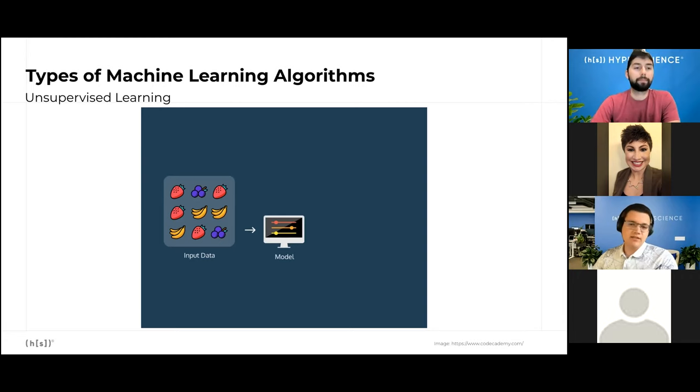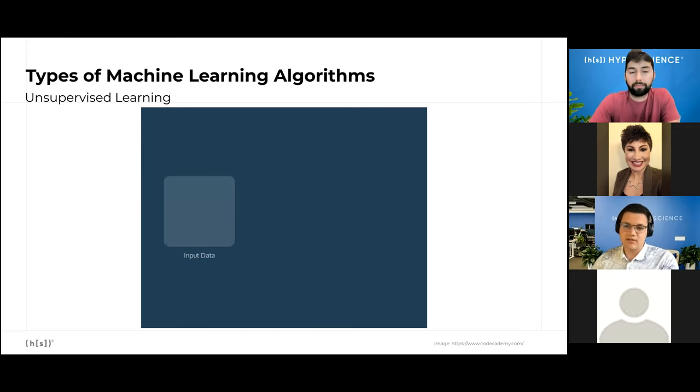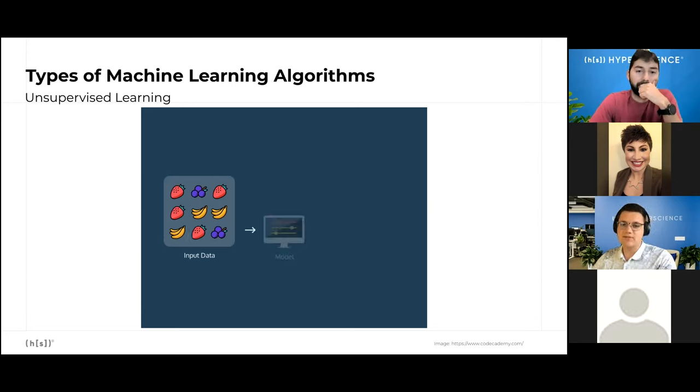Another example would be banks detecting fraudulent transactions using anomaly detection, which is an unsupervised learning approach, by looking for unusual patterns in customer purchasing behavior.